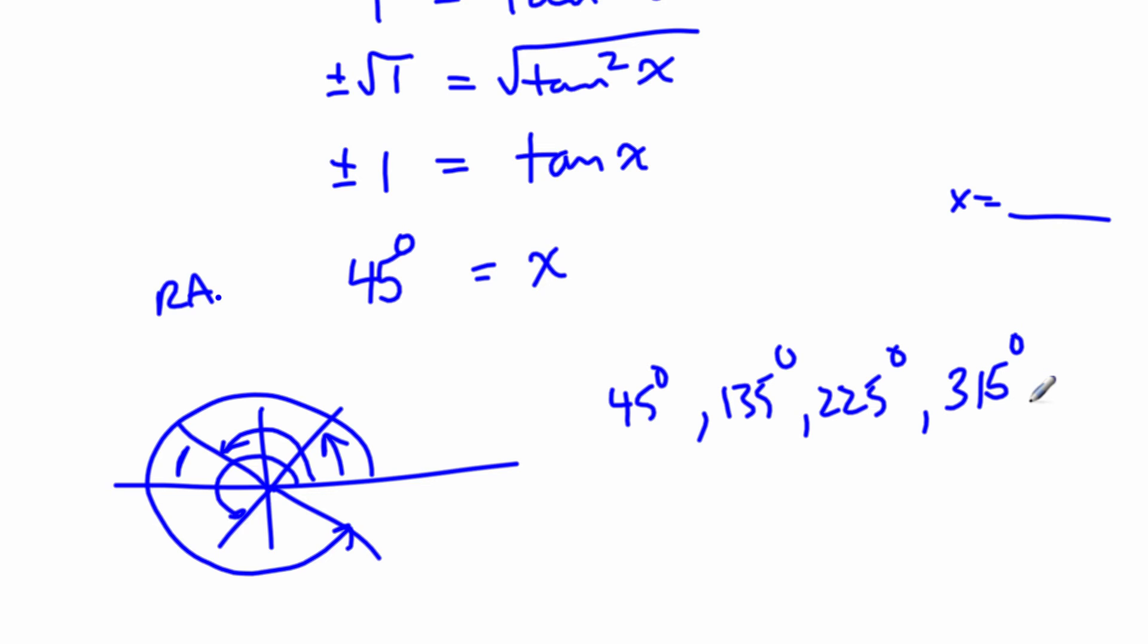So those would be my four answers to the question. If they want it in radians, you can give it in radians. So pi over 4, 3 pi over 4, 5 pi over 4, and 7 pi over 4.